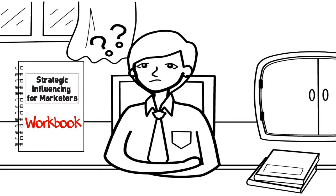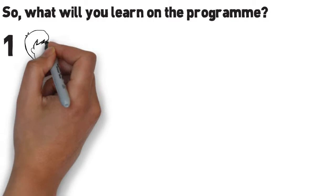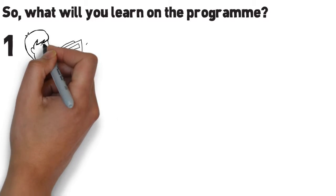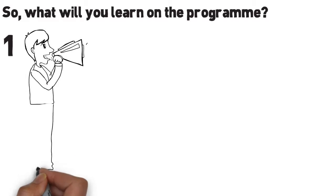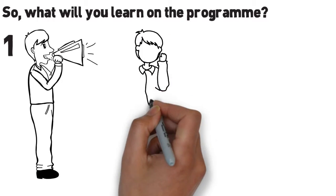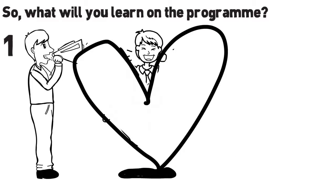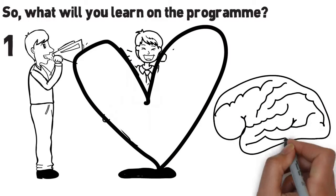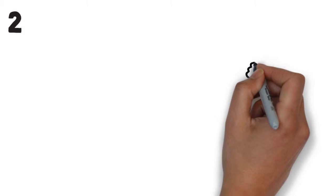So what will you learn on the program? First up, influencing uses more subtle techniques than selling and negotiation. It is based on using indirect methods to achieve specific goals and is primarily concerned with people's feelings and emotions. In other words, the parts of the brain that's concerned with making the decisions.